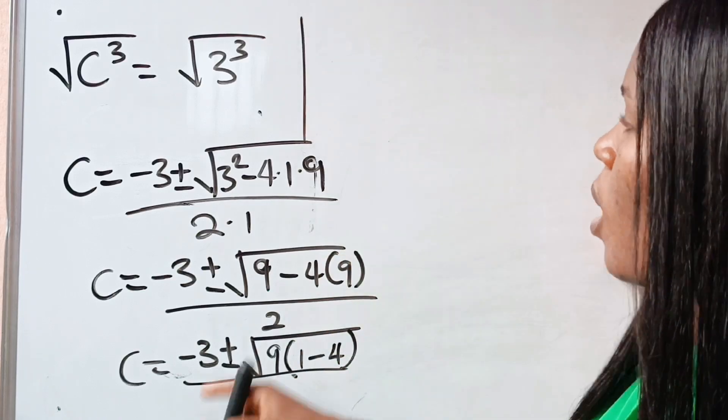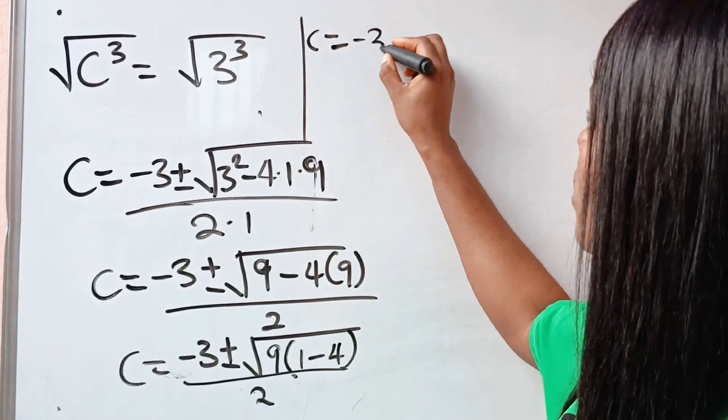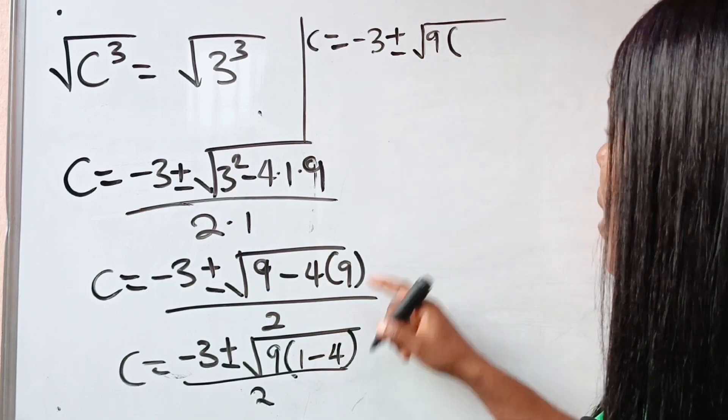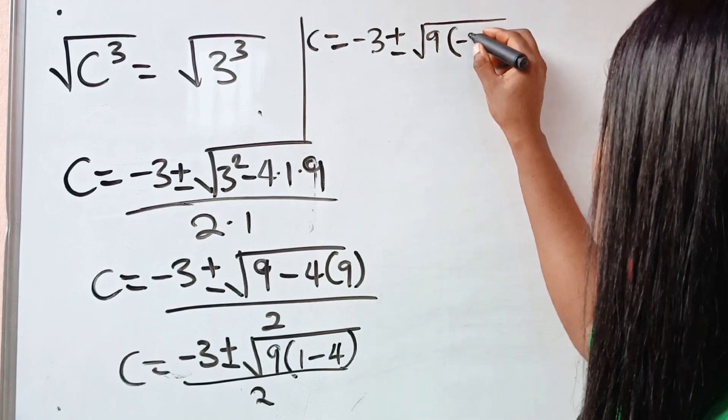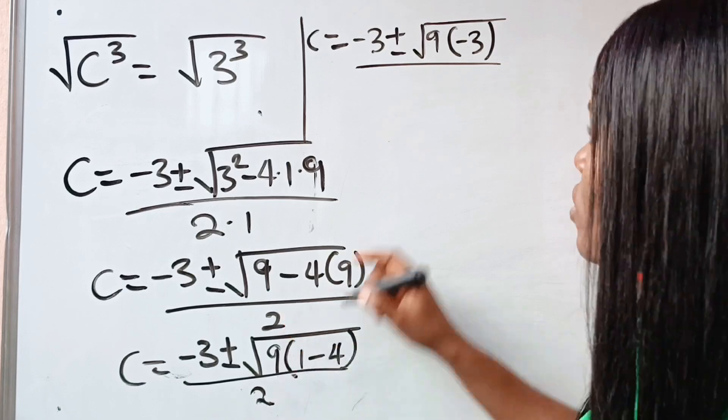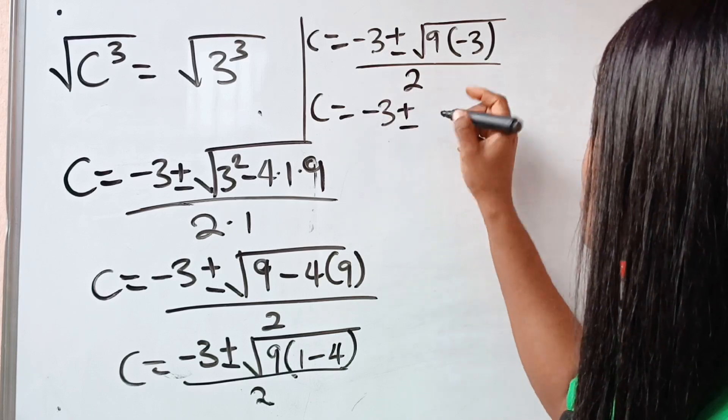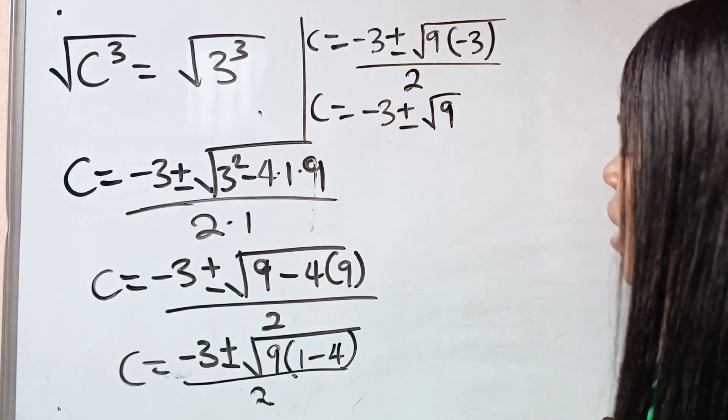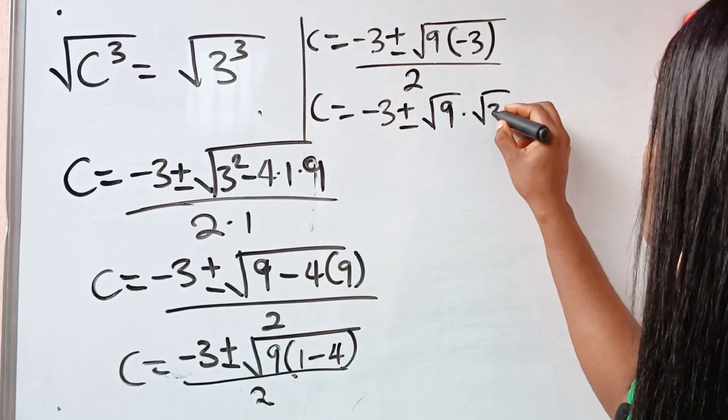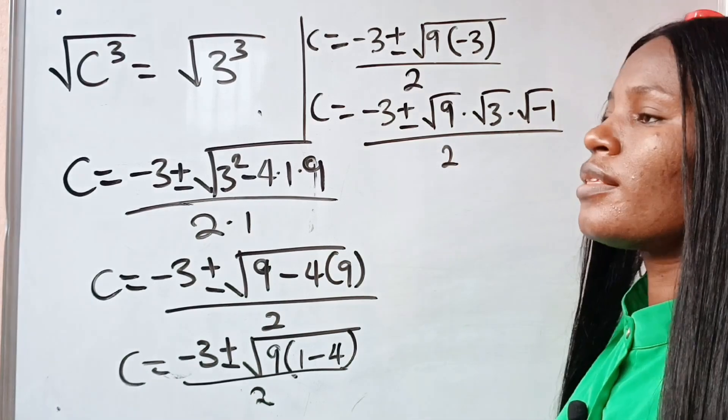I don't know if you can still see this. So what we have here is that c is equal to minus 3 plus or minus square root of 9 brackets. 1 minus 4 is minus 3, divided by what we have here as denominator is still 2. So c is equal to minus 3 plus or minus, this can be expressed as square root of 9, then multiply by square root of negative 3, multiply by square root of minus 1. Everything divided by 2.